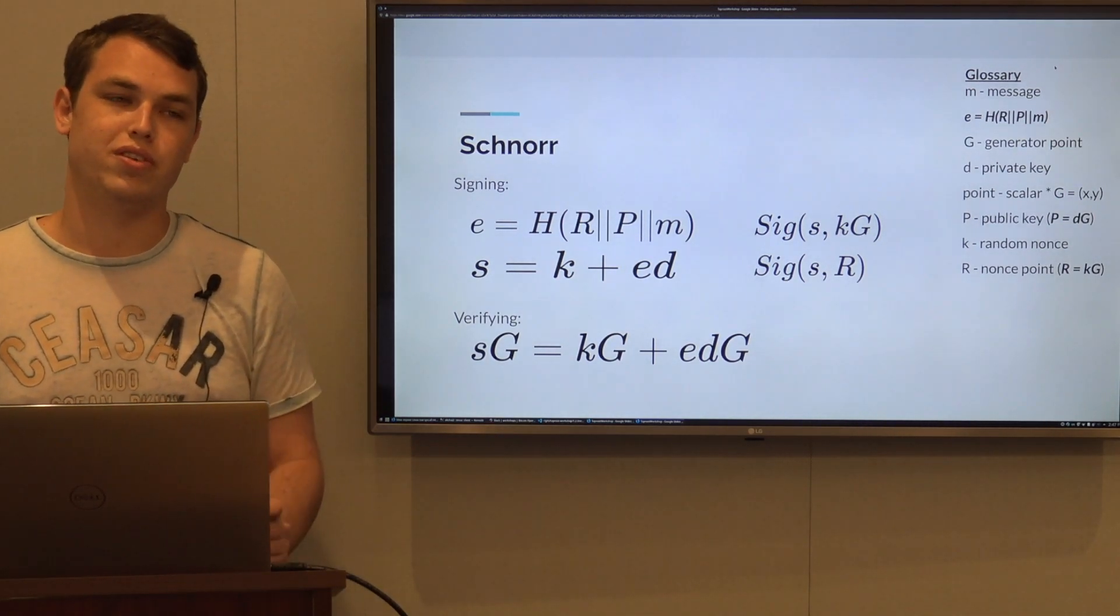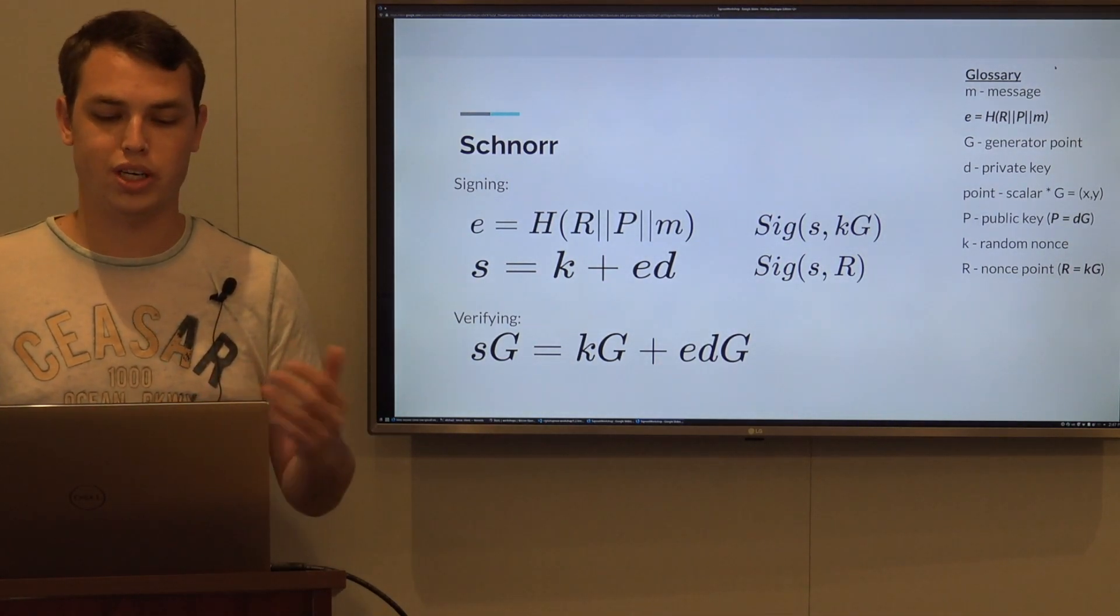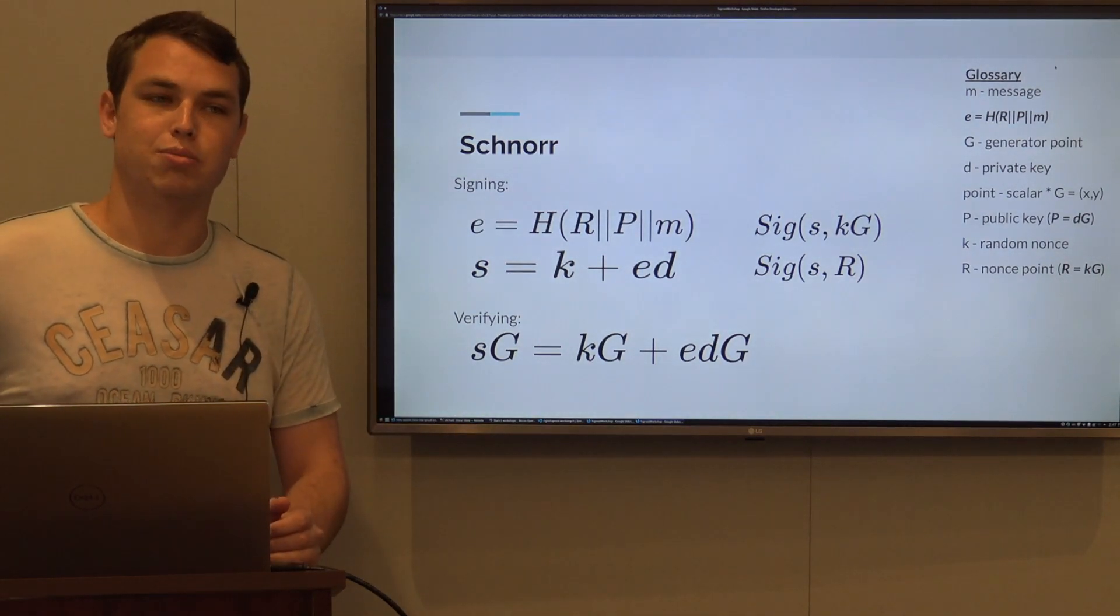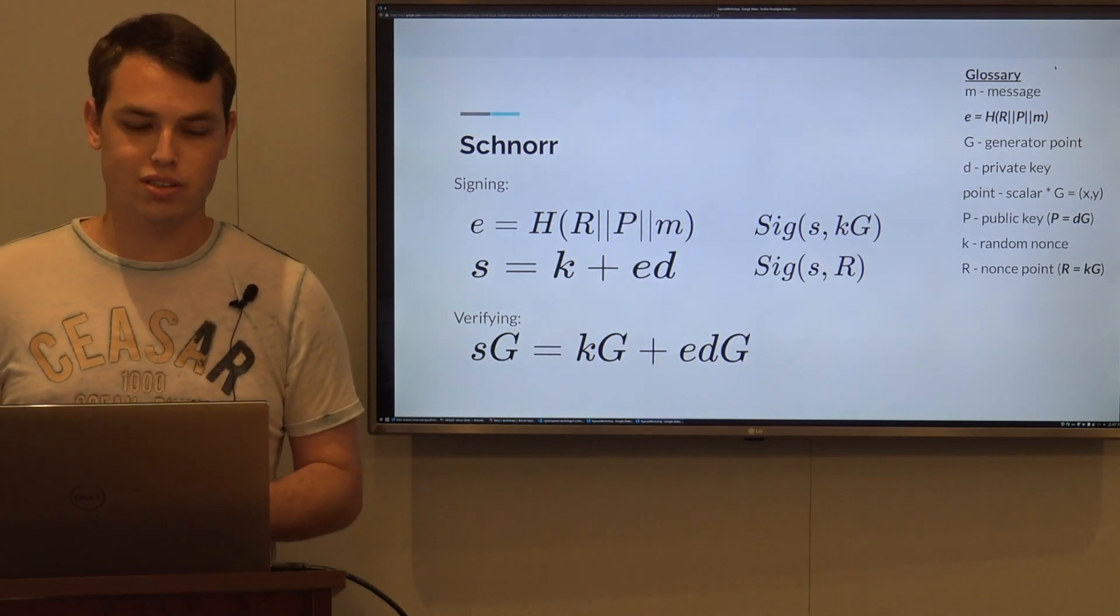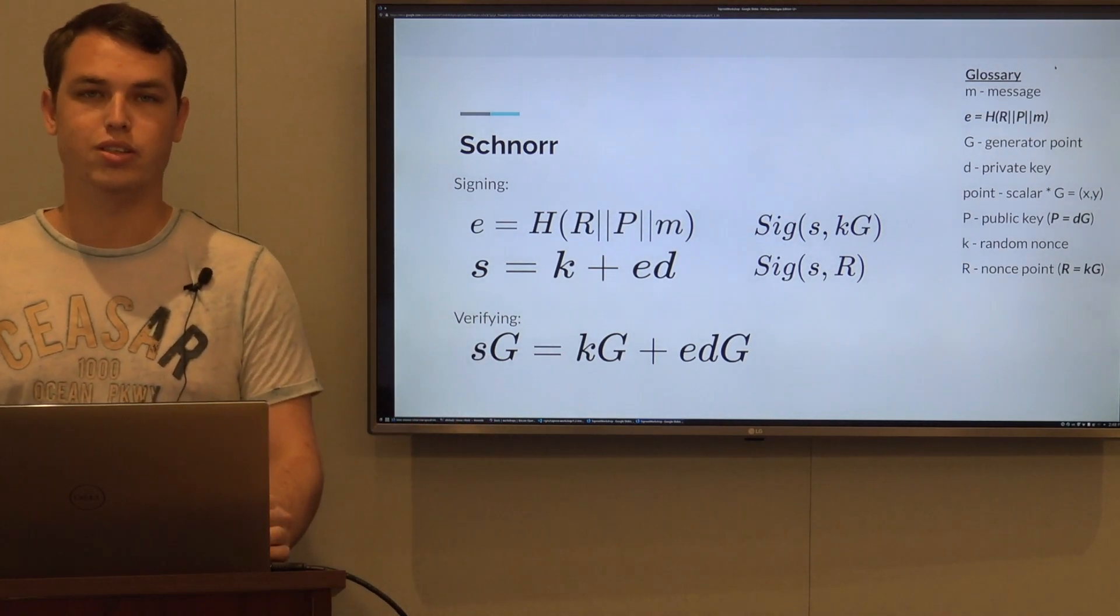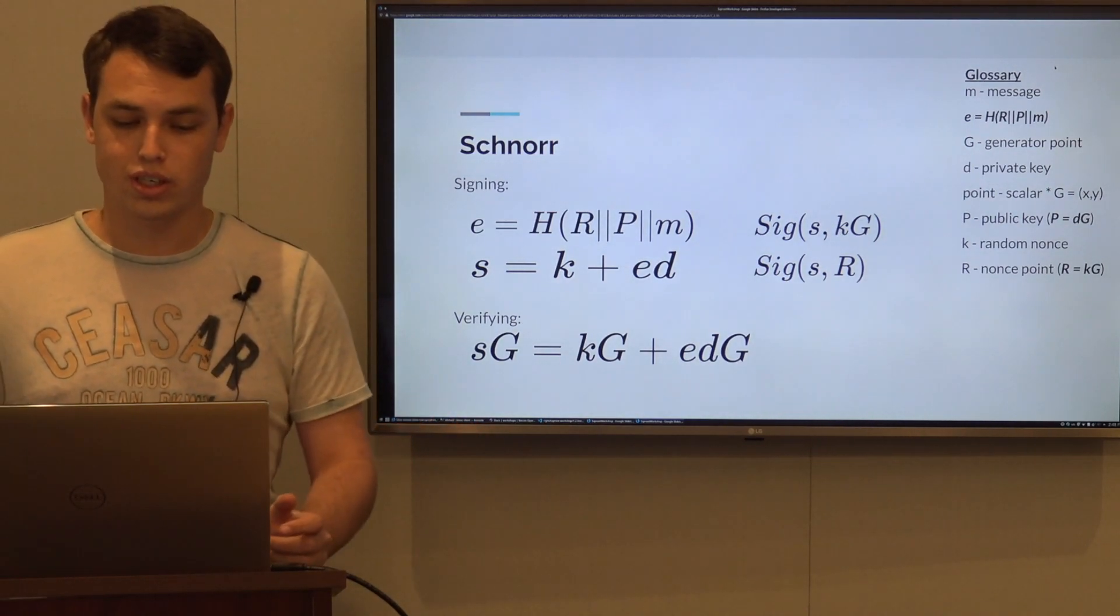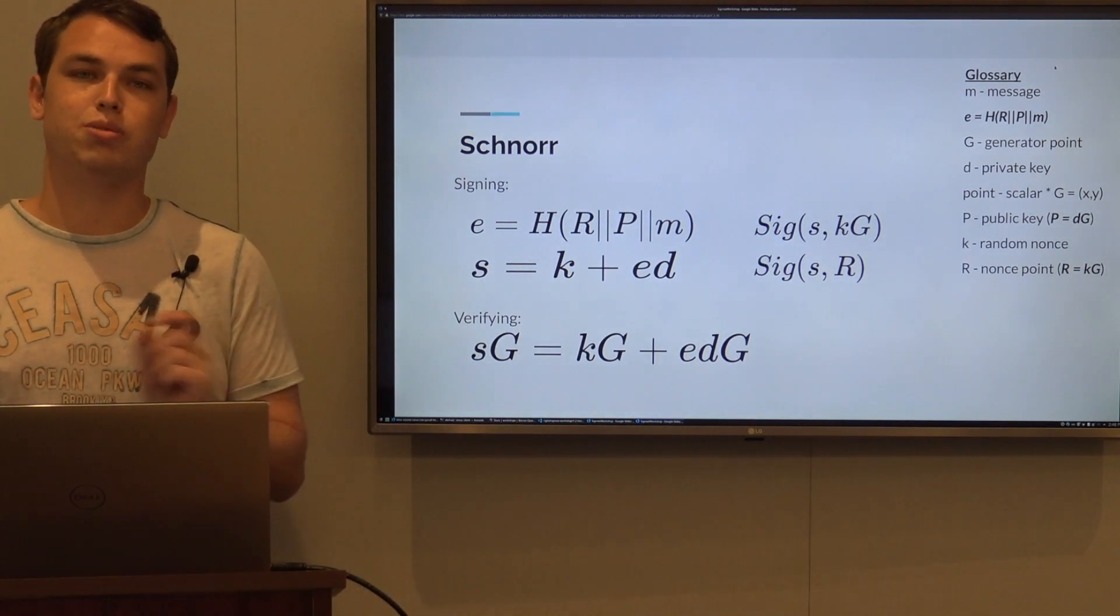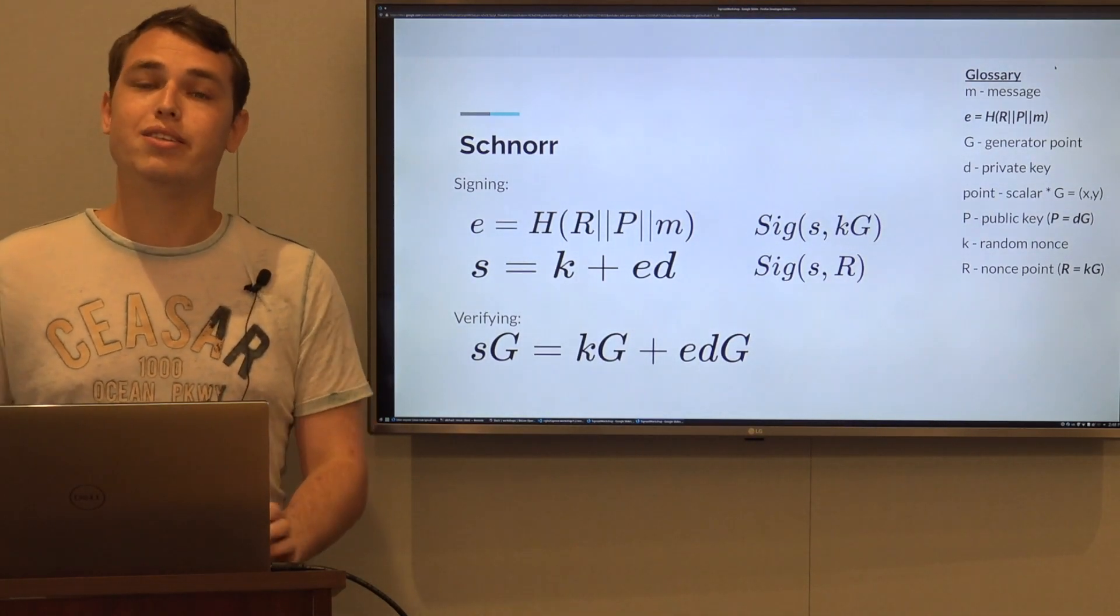E will contain R which is the public nonce, P which is your public key, and M which is the message. The general intuition is that you can't fake a signature for relative private keys - meaning you have two private keys that are somewhat connected, like an HD wallet. So you cannot just offset the signature by the known difference between those private keys to forge a signature. That's why we need to hash both the public nonce and the public key.